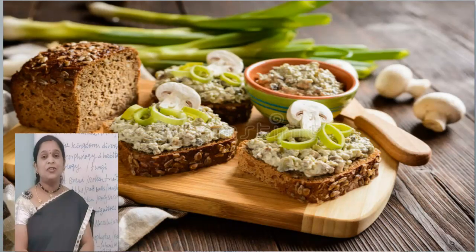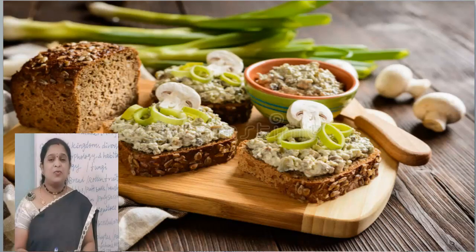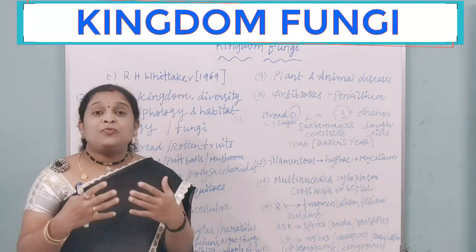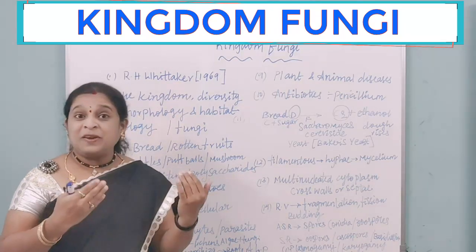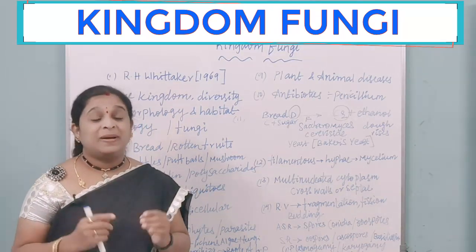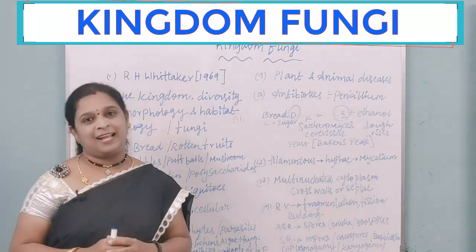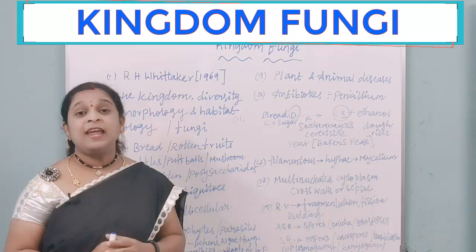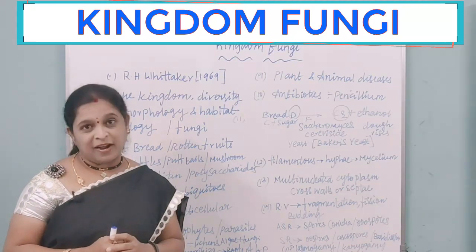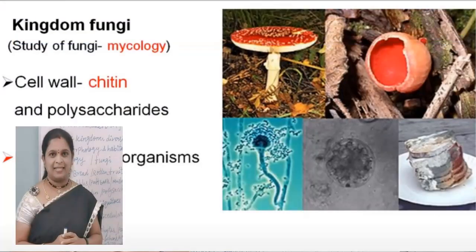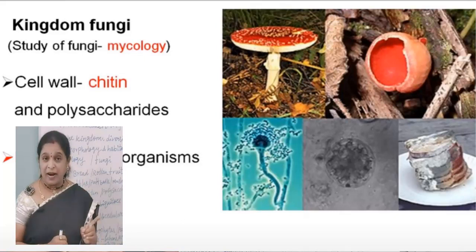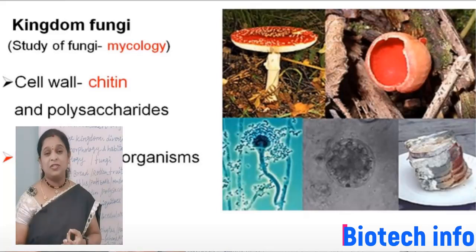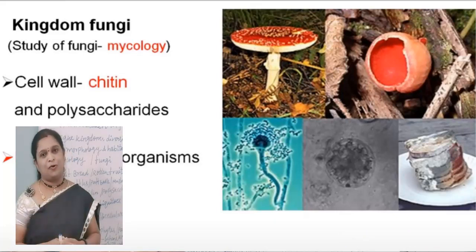What is the structure of fungi? The first point to know is about the cell wall. Previously we have seen some organisms whose cell wall is made up of cellulose, but here the fungi cell wall is made up of chitin. Along with chitin, another substance is also present in the cell wall of fungi — that is polysaccharides, which is a compound of carbohydrates.